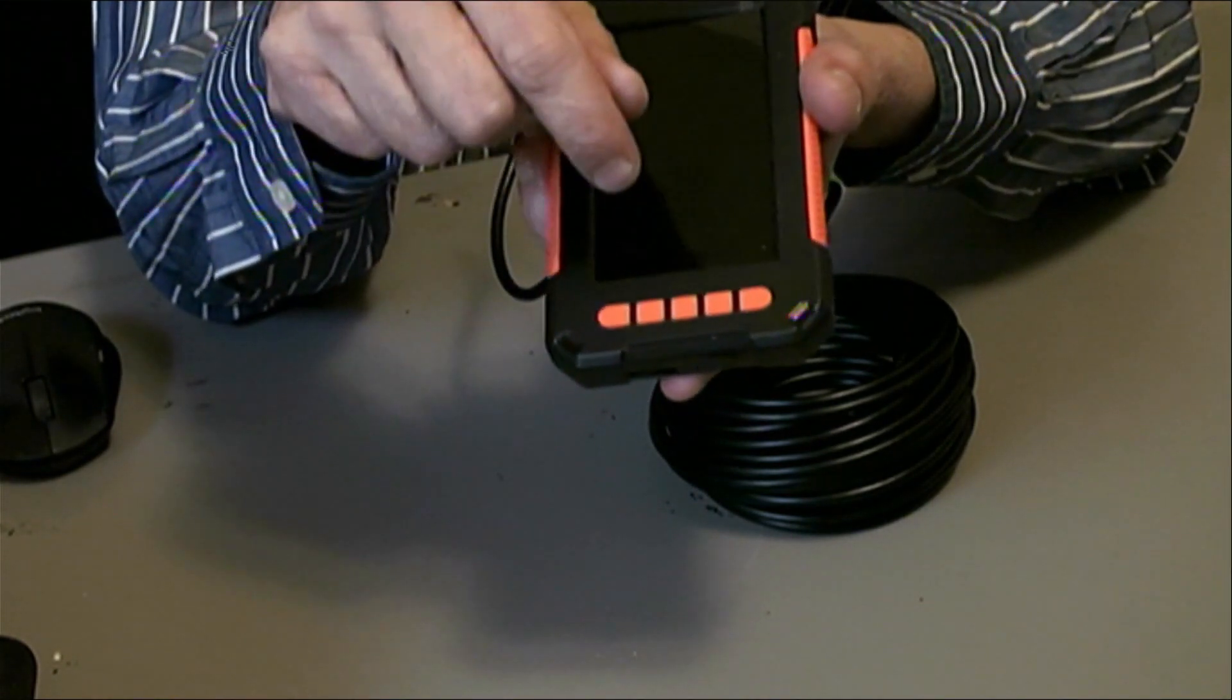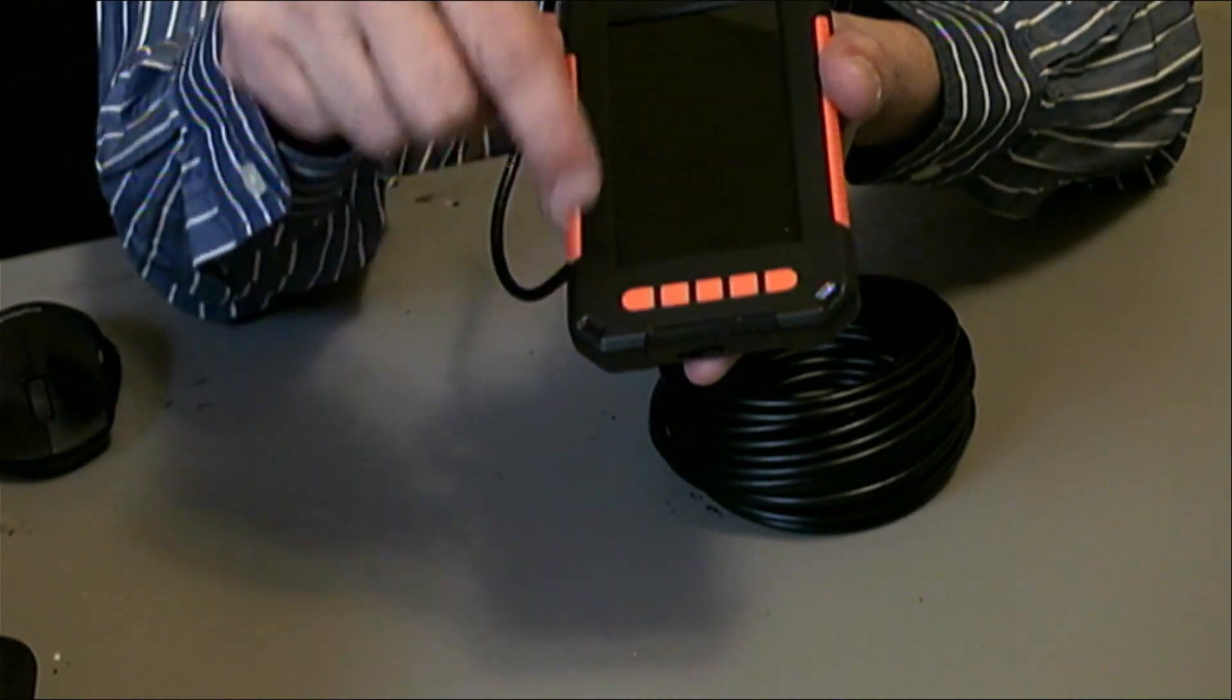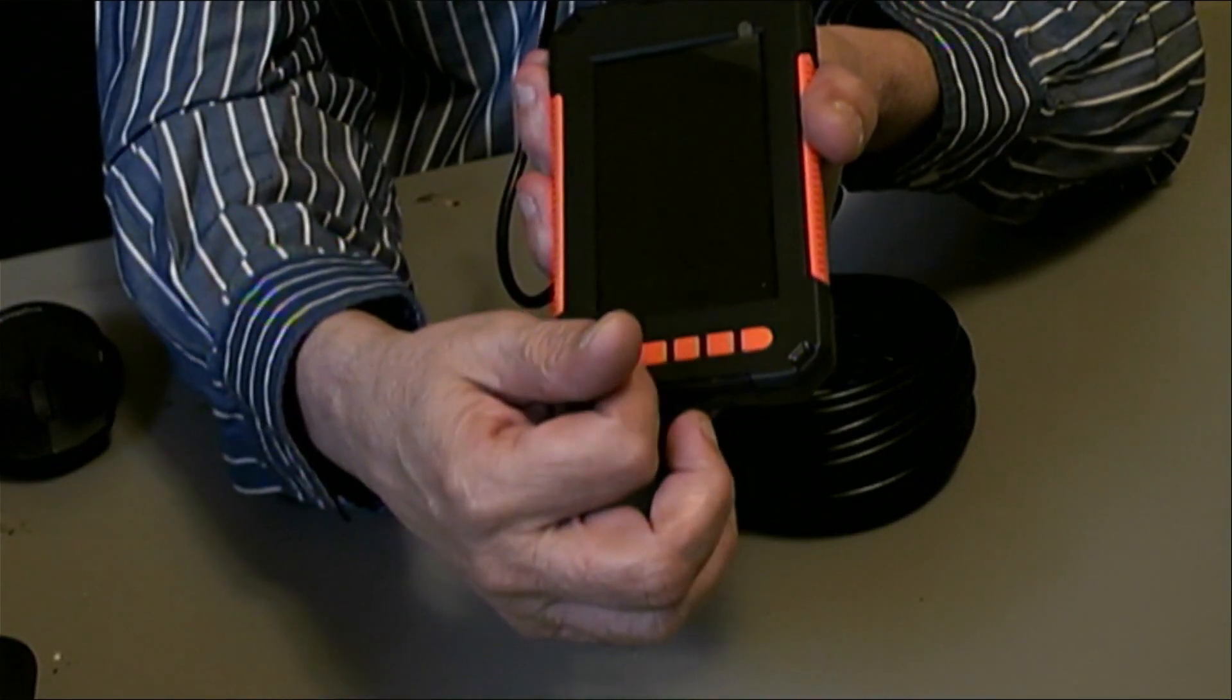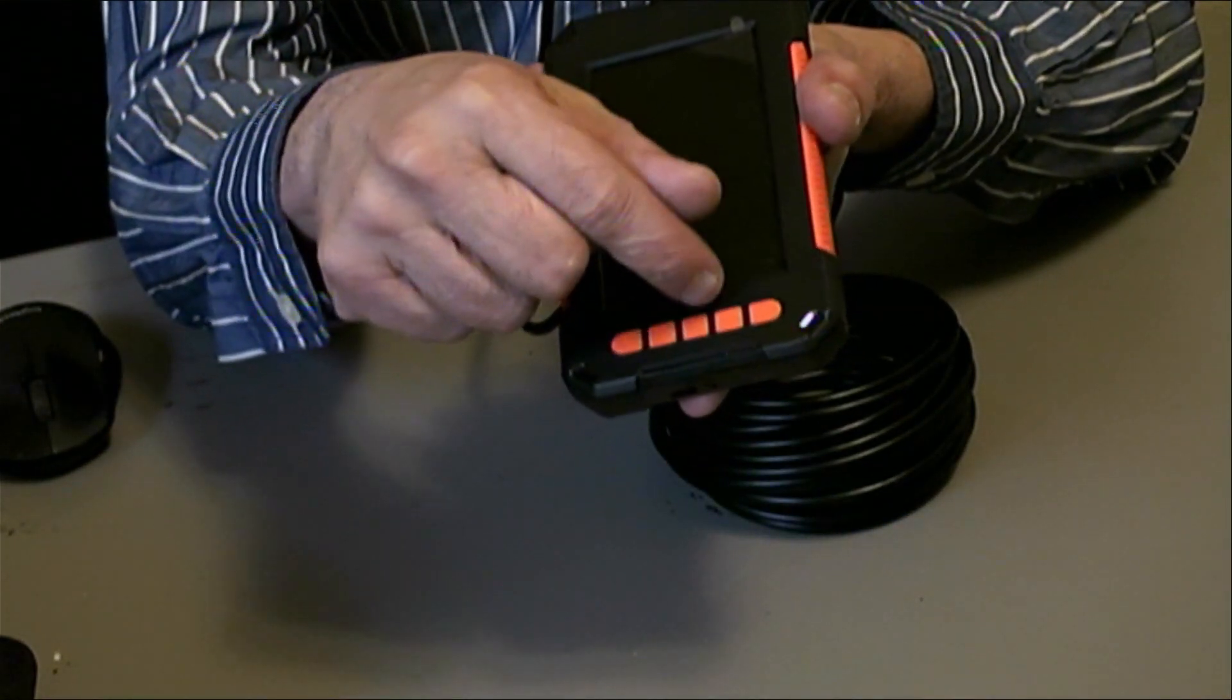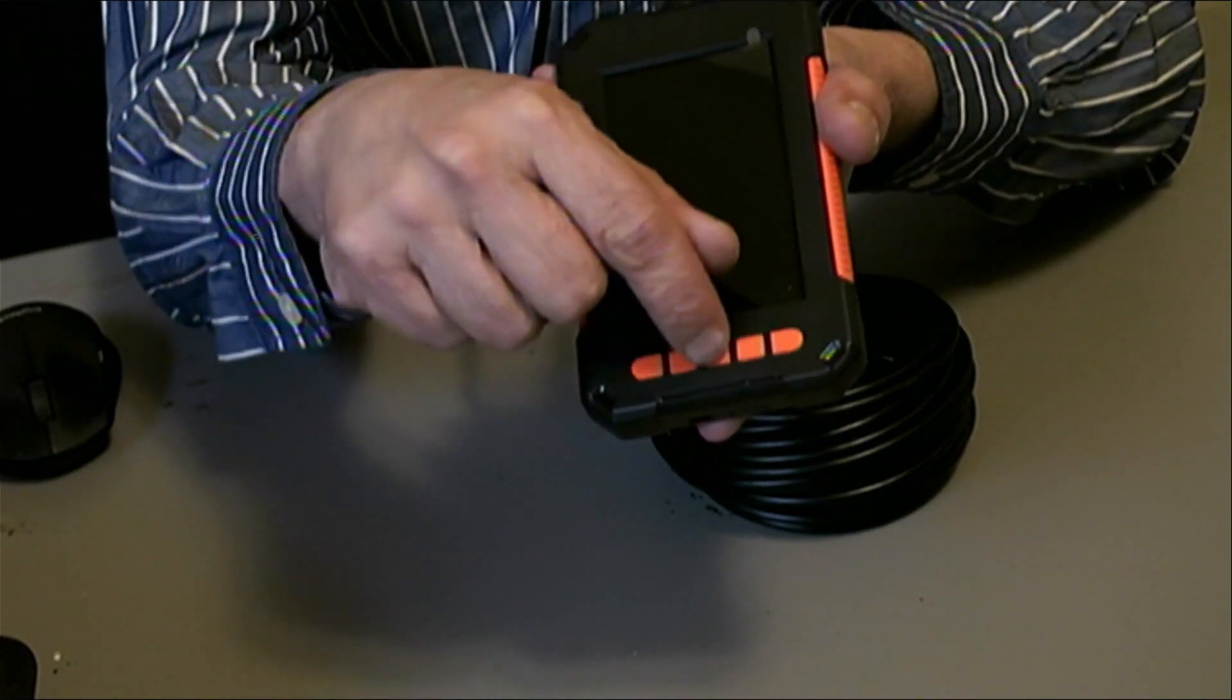He told me to get some nail polish and put some nail polish in there. And when the nail polish dries, just scratch off the top of the thing. And the nail polish would stay on the inside of that print that's on there. And you can see it a lot better.